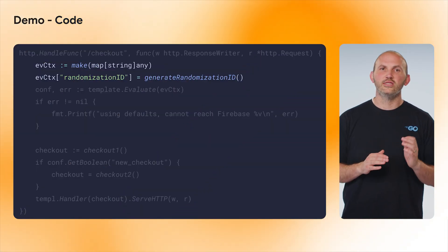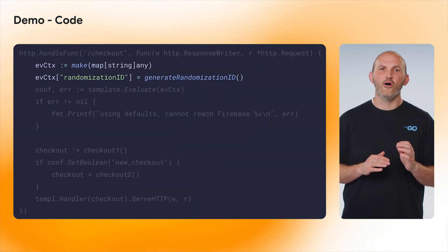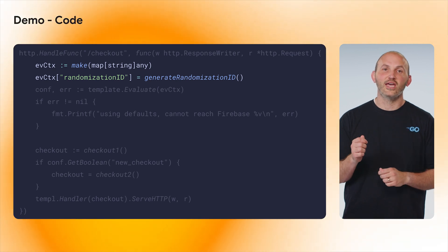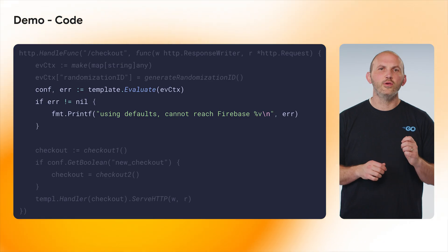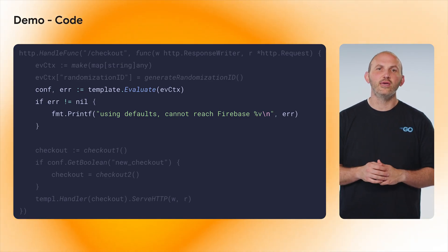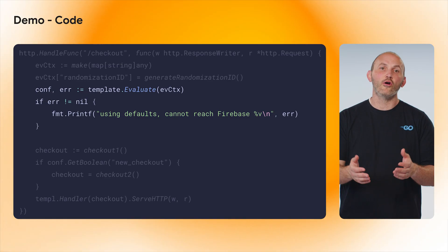Now, to evaluate the results and determine the checkout flow we want to serve, we first need to create an evaluation context and assign it a randomization ID. Depending on what experience you want to deliver for your users, you could either use their user ID, which would deliver a consistent experience for that user, or you could do as we are doing and use a totally random value. Once this is done, we call template.evaluate, passing in our evaluation context, and we get back our server configuration.